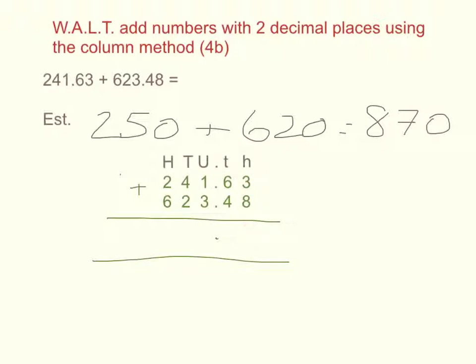I would start with my three hundredths and my eight hundredths and add them together. Eight hundredths add three hundredths is eight, nine, ten, eleven hundredths. Eleven hundredths is the same as one tenth and one hundredth.